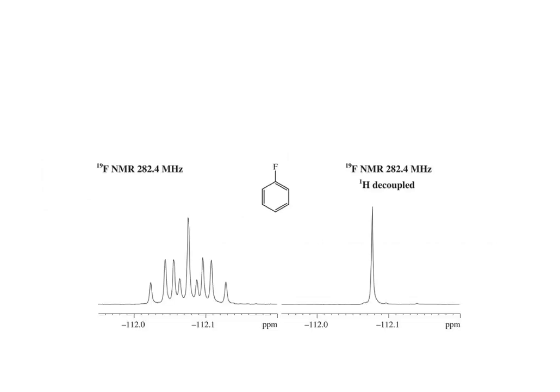For fluorobenzene, the fluorine-19 spectrum is a triplet of triplets. This is consistent with fluorine-19 having a larger three-bond coupling with the orthoprotons, and then smaller four-bond couplings with the metaprotons.